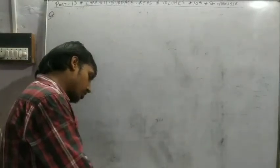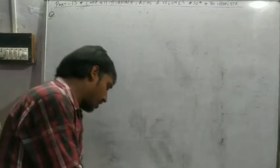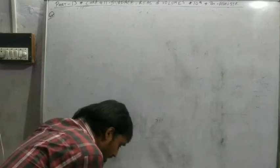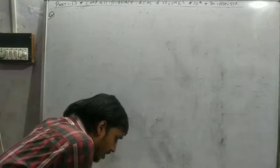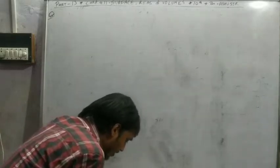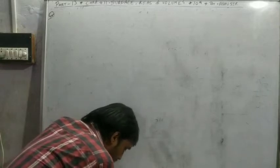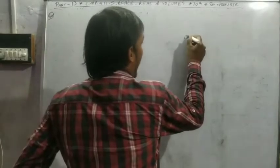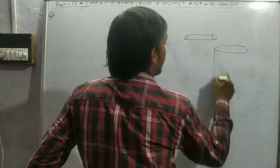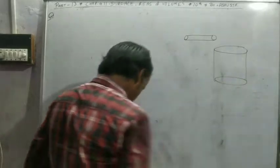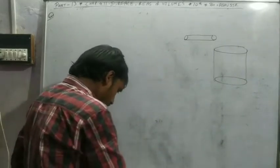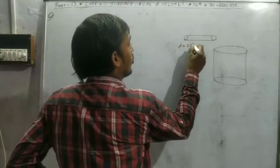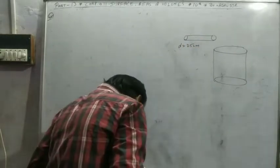I've already explained this question, but I'll explain again. A farmer connects a pipe of internal diameter 25 cm from a canal into a cylindrical tank in his field. The pipe and tank are both cylindrical.